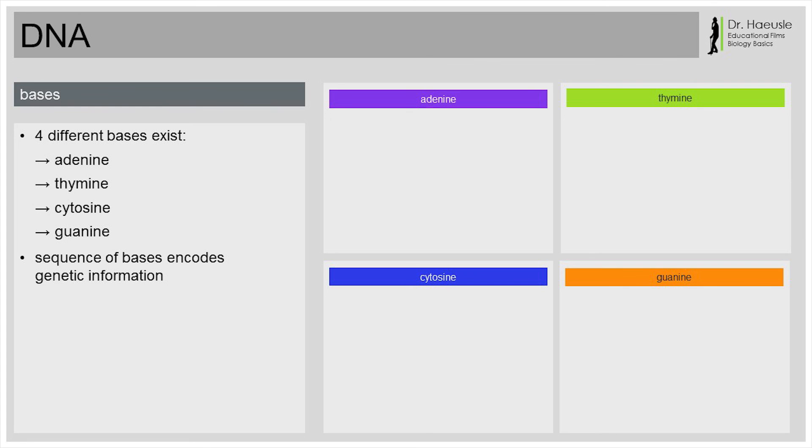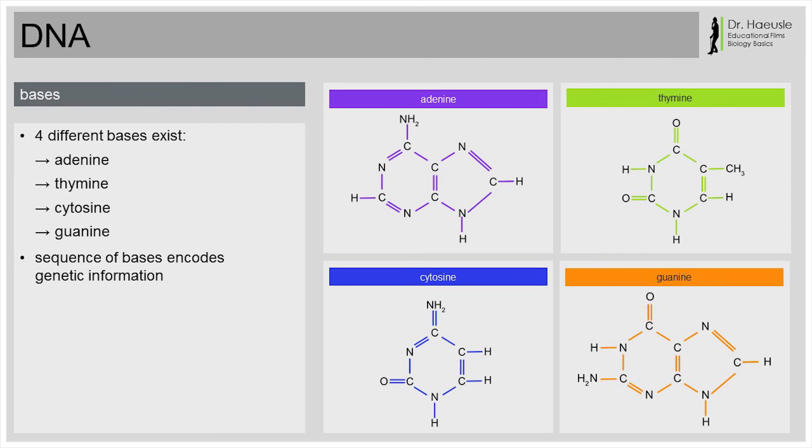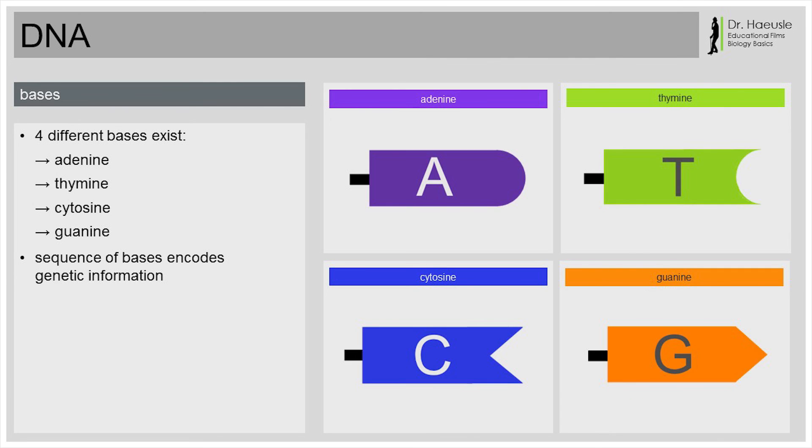And what do these four bases look like? These are the chemical structures of adenine, thymine, cytosine and guanine. Oh, that looks quite complicated. Yes, it is. However, for the fundamental understanding of how DNA is composed, it's not so important to know these chemical structures. In our video, we will only use the following symbols for the bases. A for adenine, T for thymine, C for cytosine and G for guanine. If they are not important for our video, why did we present the chemical structures in the first place? We only wanted to show the chemical structures once, so that you get an idea of how the bases are constructed in reality.